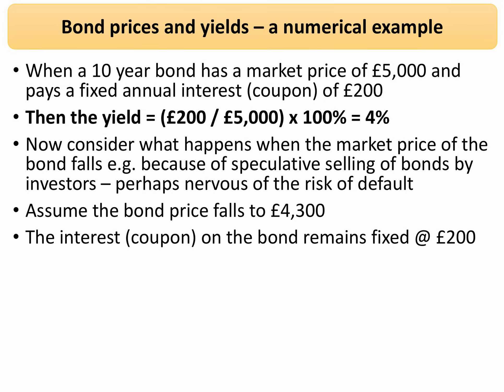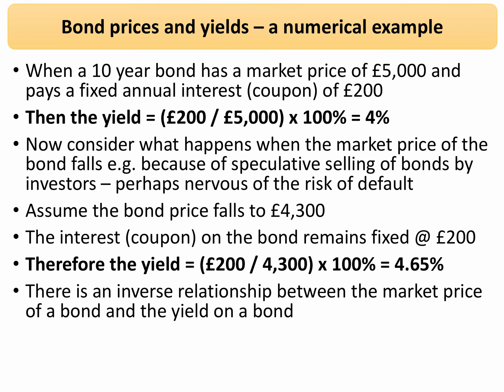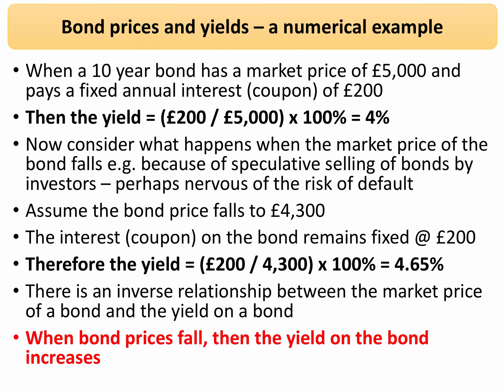The interest, of course, stays the same — the coupon is still £200. To calculate the new yield: £200 divided by £4,300, multiplied by 100, gives a yield of 4.65%. A fall in the market price of the bond causes an increase in the yield, confirming the inverse relationship. When the bond price falls, the yield on the bond goes up.